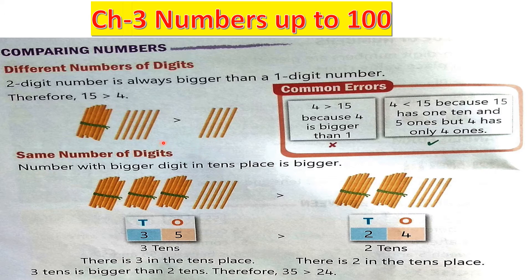Why is 15 bigger than 4? Because 15 has 10 and 5, totalling two digits, and 4 is only a single digit. Many students make the mistake of looking at the first digit — they see 1 and 4, and say 4 is bigger. But that is wrong. Here there are two digits, and here only one. Two is greater than one, so 15 is bigger than 4.